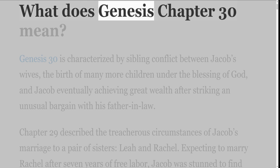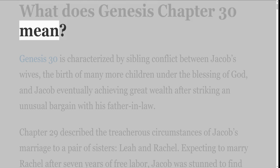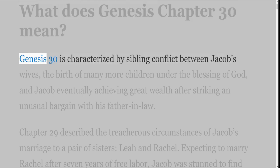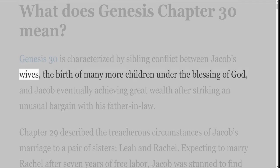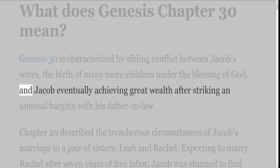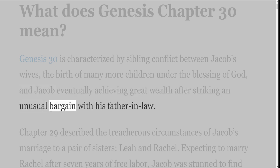What does Genesis Chapter 30 mean? Genesis 30 is characterized by sibling conflict between Jacob's wives, the birth of many more children under the blessing of God, and Jacob eventually achieving great wealth after striking an unusual bargain with his father-in-law.